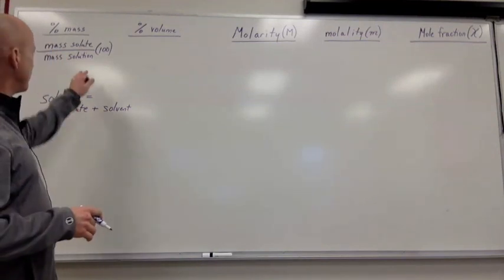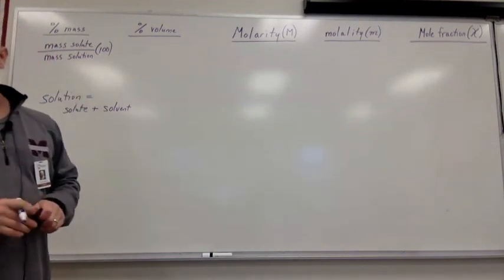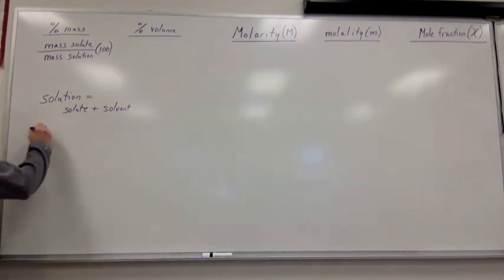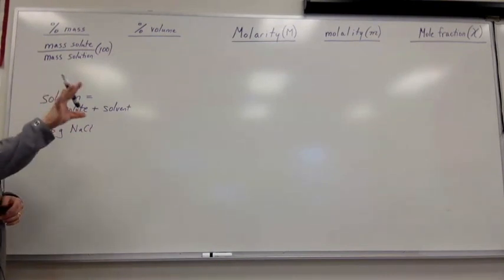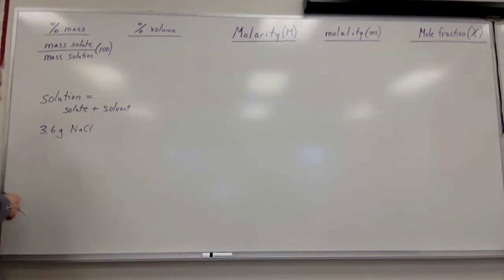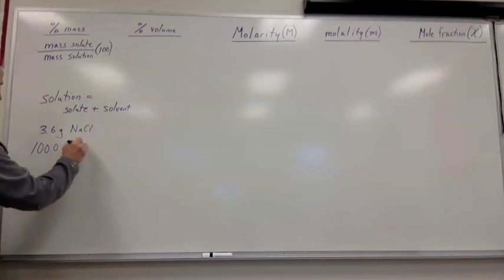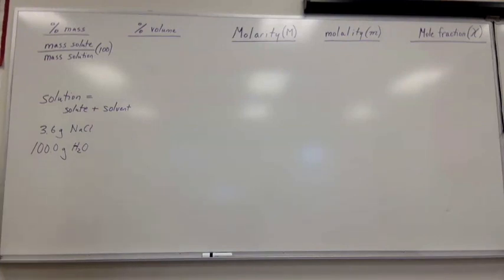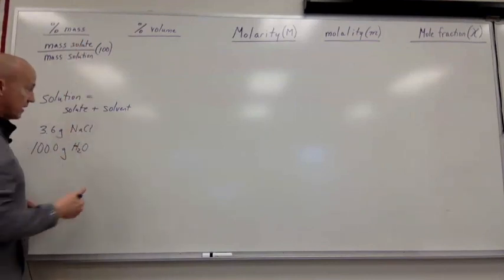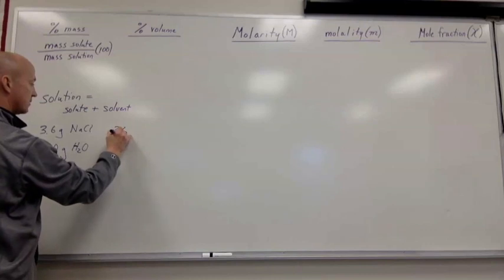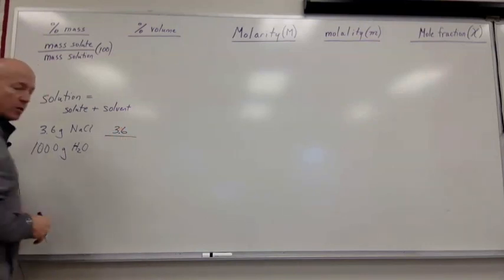So let's take, for instance, if we had a percent by mass problem, let's say that we had 3.6 grams of sodium chloride and we're dissolving it in 100 grams of water. What is the percent by mass of sodium chloride? Right? So the way that we do that is that we take the solute, which is the sodium chloride, the one we have less of, right? So 3.6 divided by what?